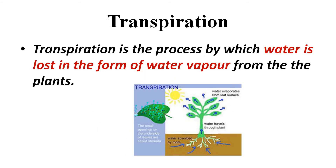Let us now study about transpiration. We know that plants need water to grow. Plants use a part of this water to prepare their food and retain some water in different parts. The remaining part of this water is released by the plants into the air as water vapor through the process of transpiration. Transpiration is the process by which water is lost in the form of water vapor from the plants.